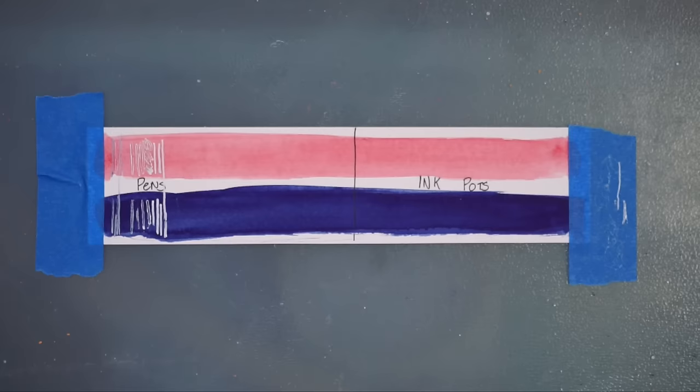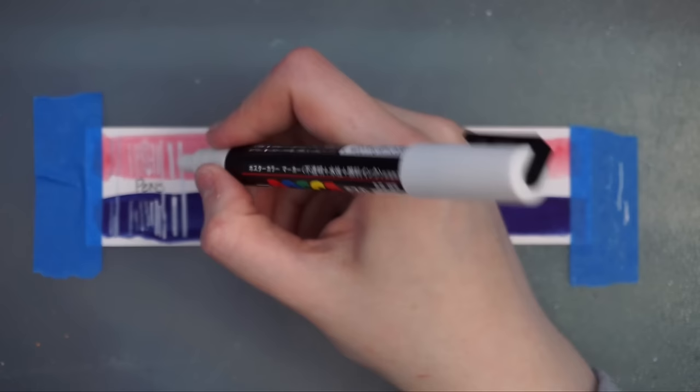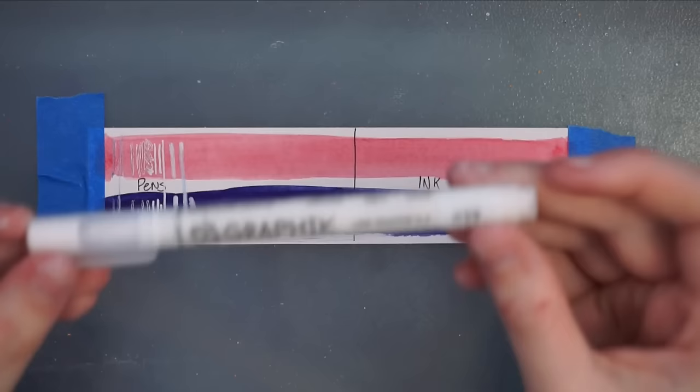Next up, the Posca marker. When I was swatching this, I wasn't completely sure if it was actually the blue picking up on the nib of the pen or whether the Posca ink just wasn't quite as opaque as the gel pens.